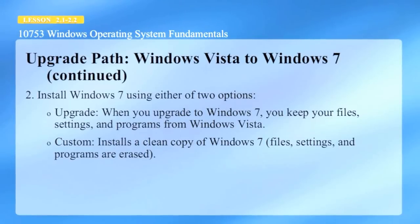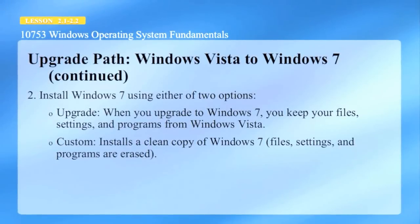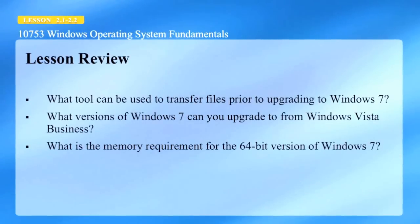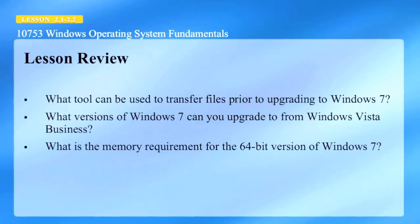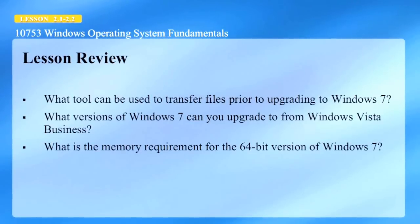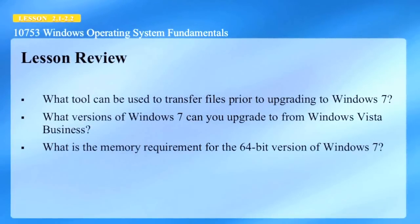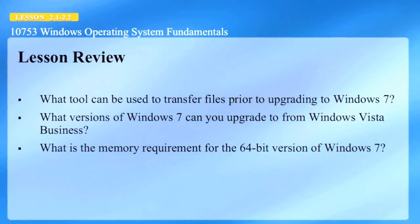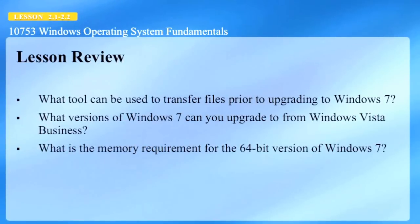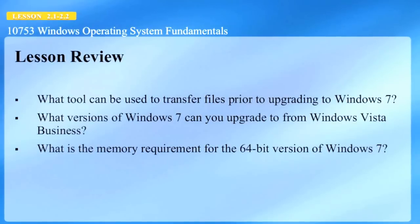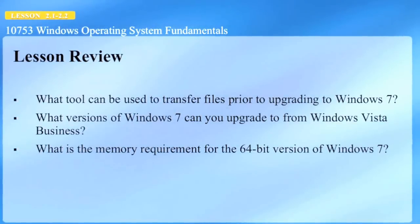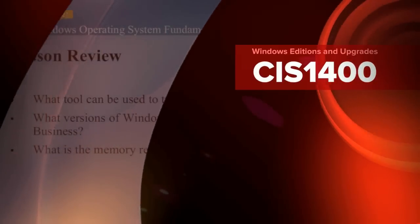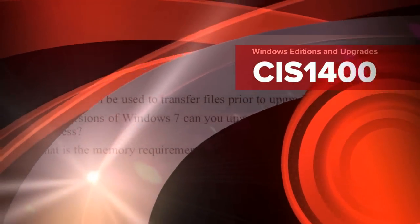In this lesson, we looked at Windows Editions, upgrade paths, and tools. Here are the review questions: What tool can be used to transfer files prior to upgrading to Windows 7? What version of Windows 7 can you upgrade to from Windows Vista Business? And what is the memory requirement for the 64-bit version of Windows 7? Please discuss these questions in your Google Hangout and post your answers in your one-page summary.